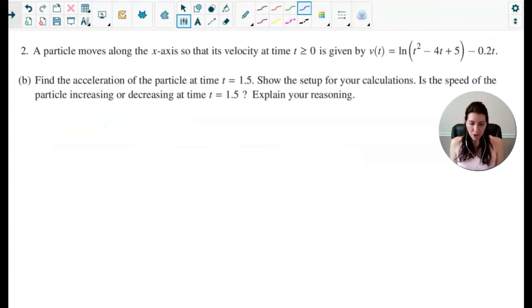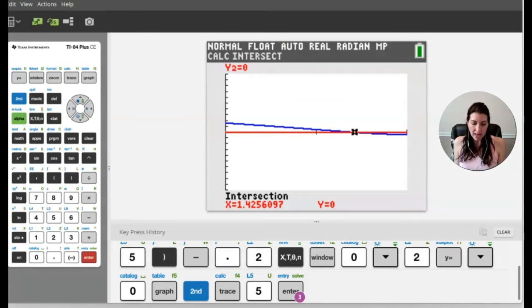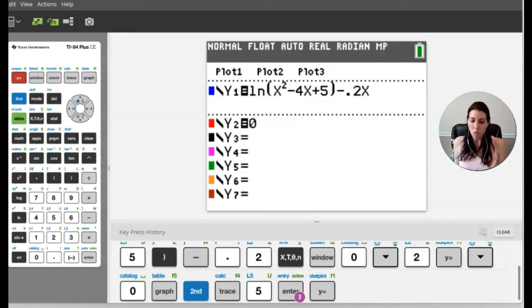Let's take a look at part B. In part B, we are asked to find the acceleration of the particle at t equals 1.5 and show the setup for your calculations. So for this part, we need to recall that acceleration at 1.5 is really the derivative of velocity at 1.5. And again, you can use your calculator for this one. And remember, I have typed in velocity into Y1.